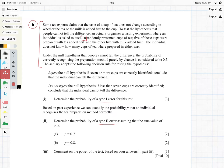Under the null hypothesis that people cannot tell the difference, the probability of correctly recognizing the preparation method purely by chance is considered to be 0.5. The actuary adopts the following decision rules for testing the hypothesis: Reject the null hypothesis if 7 or more cups are correctly identified. Do not reject the null hypothesis if less than 7 cups are correctly identified. Conclude that the individual cannot tell the difference.